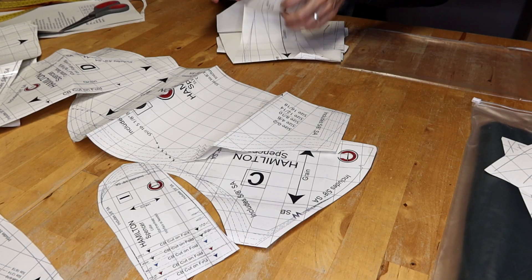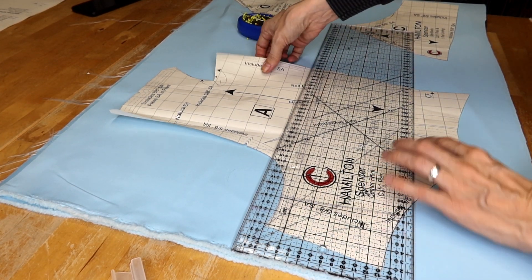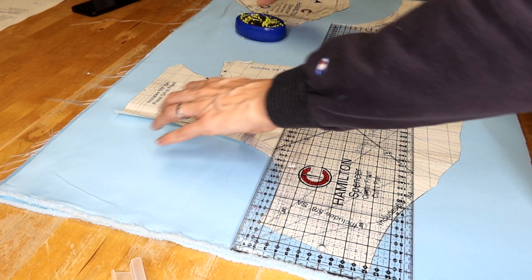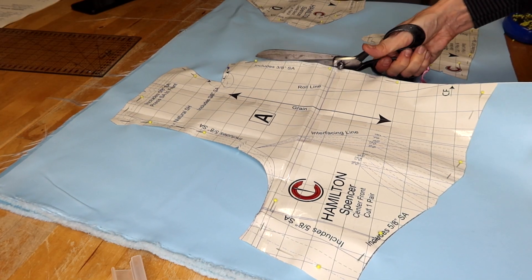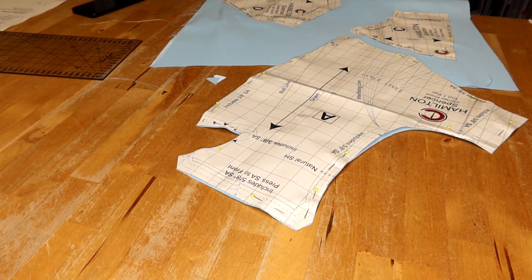After taping the pattern sheet together I made a mock-up. After some alterations I made a second mock-up before I cut into my silk taffeta. I started with a size 12-14 but I ended up with about an 8-10 after my alterations.